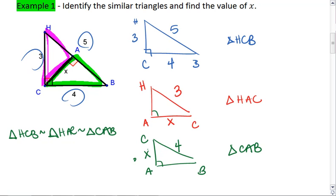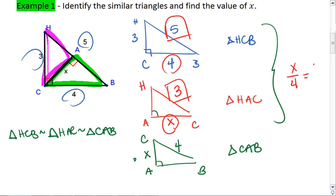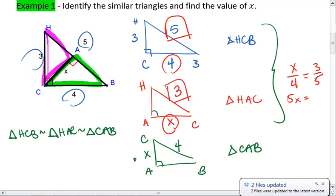So to solve for X, we can use either the blue with the red or the blue with the green. I'm just going to go ahead and use the blue with the red. We're going to set up a proportion. We know X to 4 is going to be the same as 3 to 5. Cross multiply, I get 5X equals 12. X is going to equal 12 over 5.